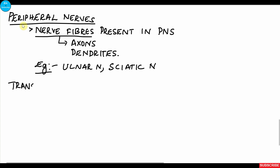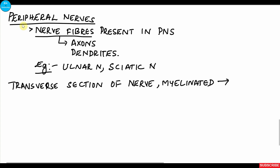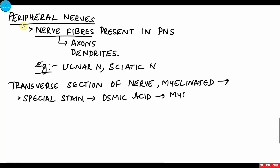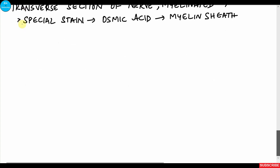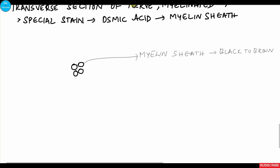In histology we see both the transverse section and the longitudinal section of the peripheral nerves. In the transverse section of the myelinated nerve, a special stain called osmic acid is used. This stain specifically stains the myelin sheath, which takes up a brownish to black color, whereas the axoplasm and surrounding connective tissue take up a lighter yellow color. Each individual axon surrounded by myelin sheath can be appreciated, with the central axoplasm appearing light yellow or orange.